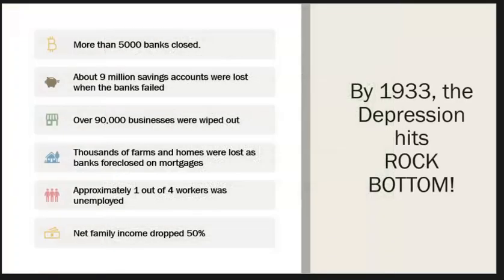By 1933, the Depression had hit rock bottom. More than 5,000 banks had closed. About 9 million savings accounts were lost when the banks failed. Over 90,000 businesses were wiped out. Thousands of farms and homes were lost as banks foreclosed on people's mortgages. Approximately one out of four workers were unemployed. Net family income dropped 50%.